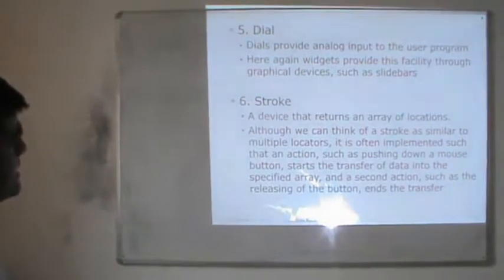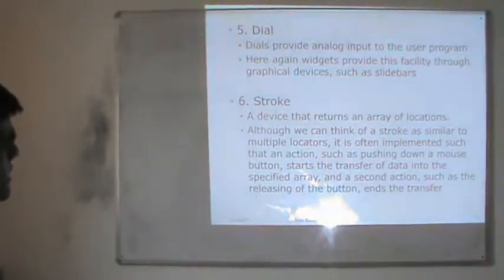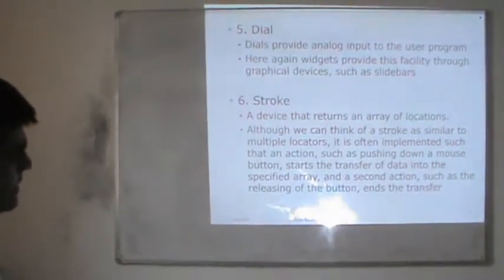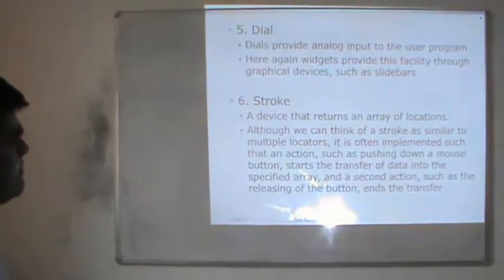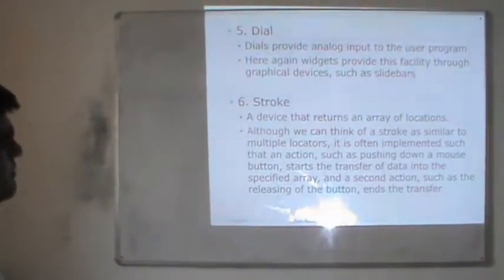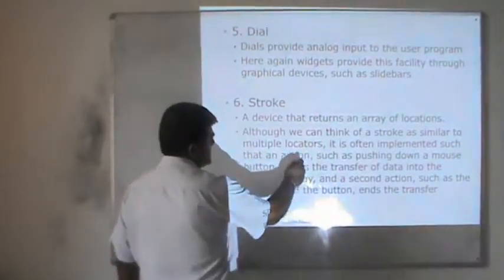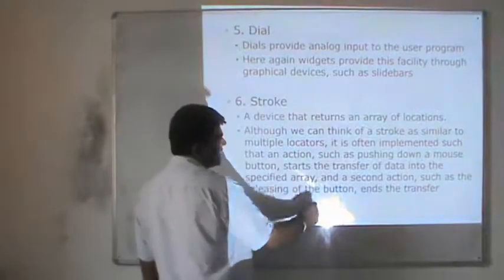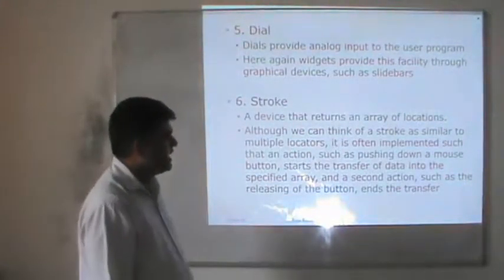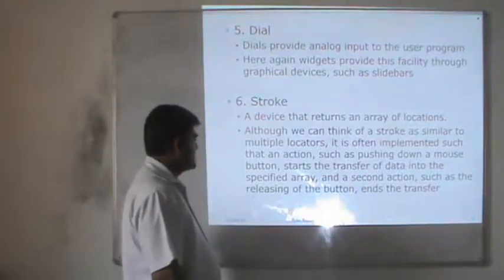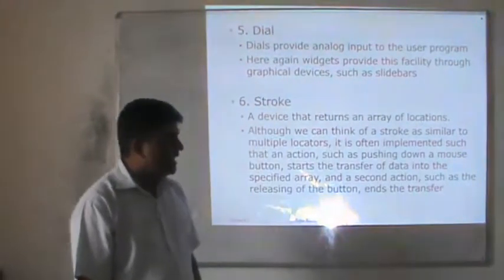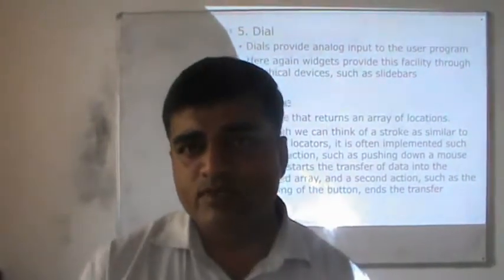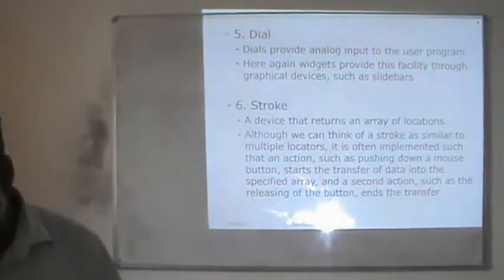A valuator provides analog input to the user program; widgets provide this facility through graphical devices such as slide bars. A stroke device returns an array of locations. It can be thought of as similar to multiple locators, often implemented such that pressing down a mouse button starts the transfer of data into a specified array, and a second action such as releasing the button ends the transfer.